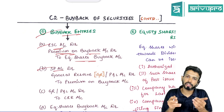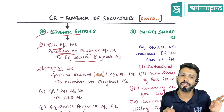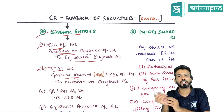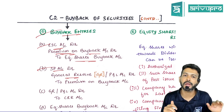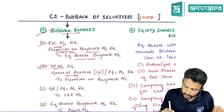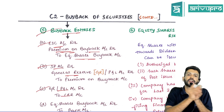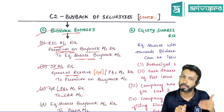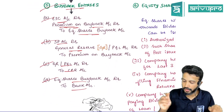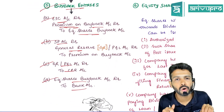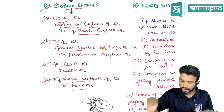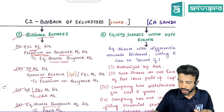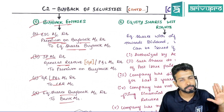To set off the premium on buyback, first utilize the securities premium account — debit SP account, credit Premium on Buyback. If securities premium doesn't have sufficient balance, utilize free reserves like general reserve. The entry to create CRR: CRR is only created from free reserves, so debit General Reserve or P&L account, credit CRR account. The payment entry: debit Equity Share Buyback account, credit Bank account. That's your quick revision on buyback of equity shares.